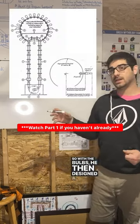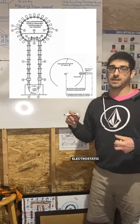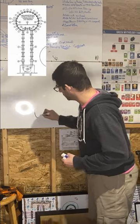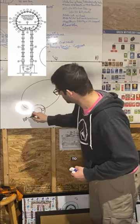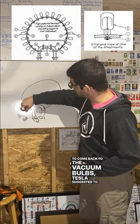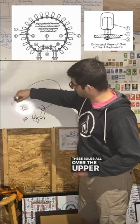So with the bulbs, he then designed a way for improving electrostatic generators. To come back to the vacuum bulbs, Tesla suggested to put these bulbs all over the upper terminal.